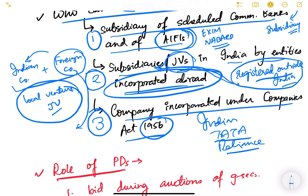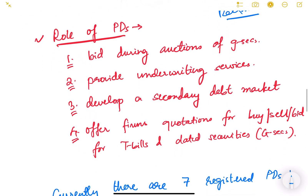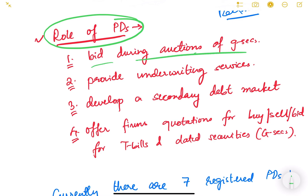The third criteria is it can be a company incorporated under the Companies Act 1956 — a purely Indian company like Tata or Reliance, registered in India under the Companies Act. These are the three criteria to keep in mind for who can become primary dealers. Now, what are the roles of primary dealers? First, they bid during the auctions of government securities, meaning they can directly participate and transact with RBI.